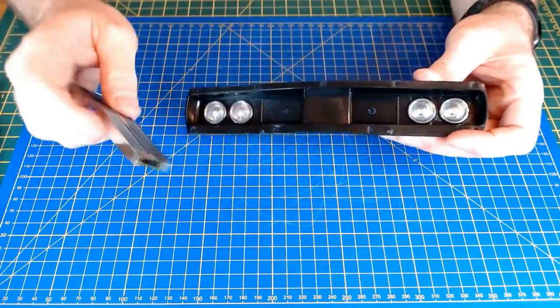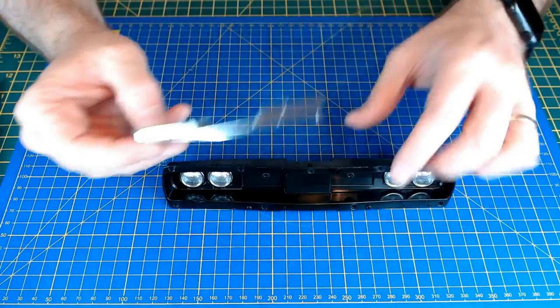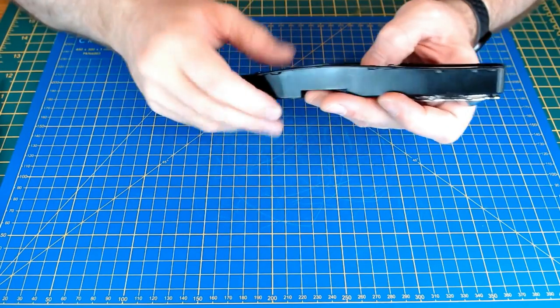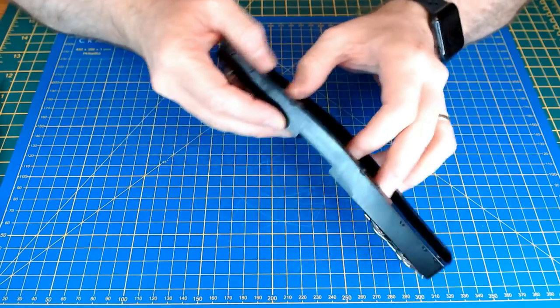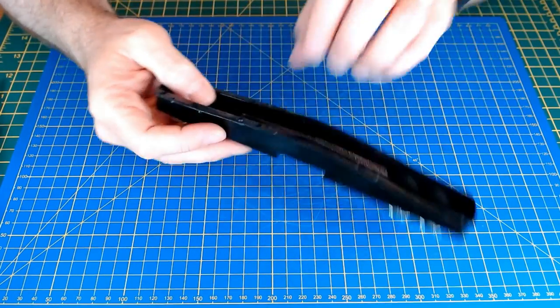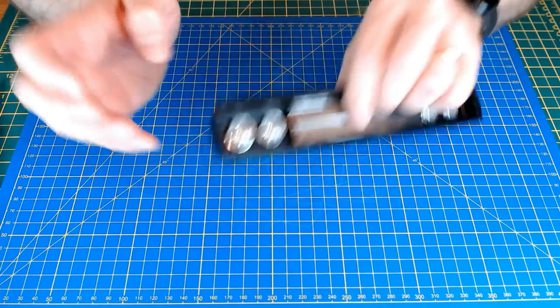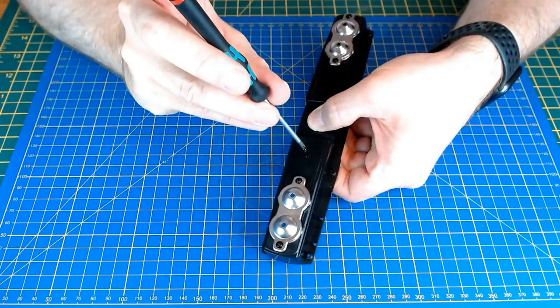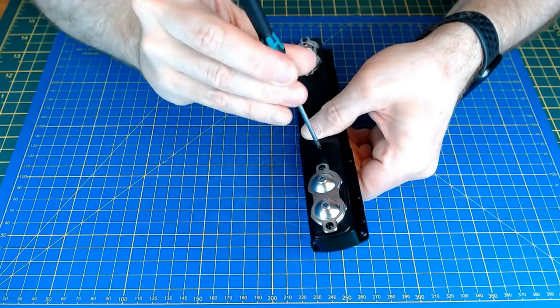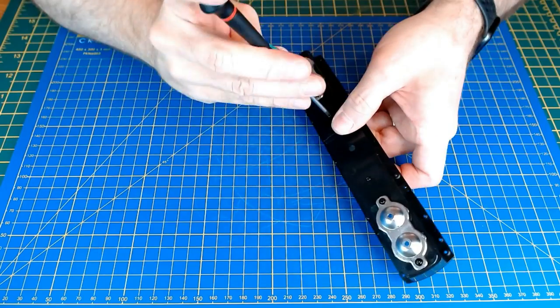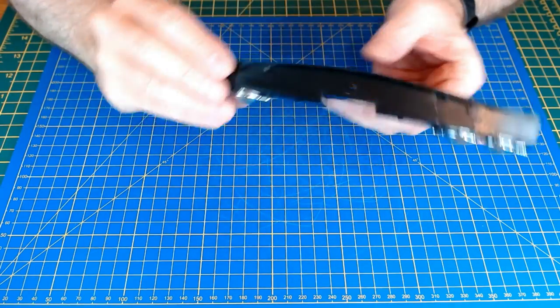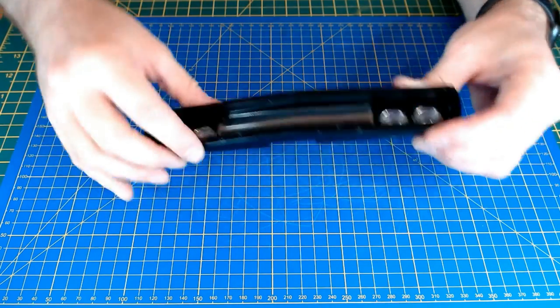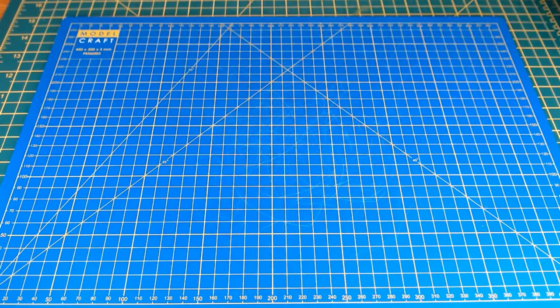Okay, now I've got the radiator grill to go on. I'm assuming there's only one way around for this to go, maybe not. Two AP screws are going to hold that in place. Okay, we've now got the grill itself.